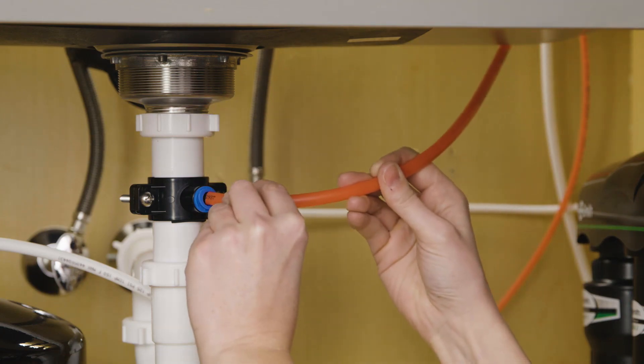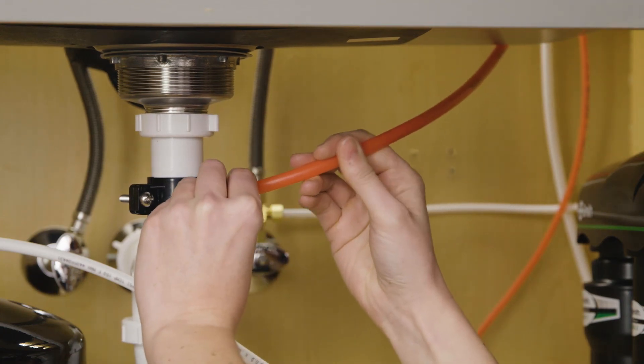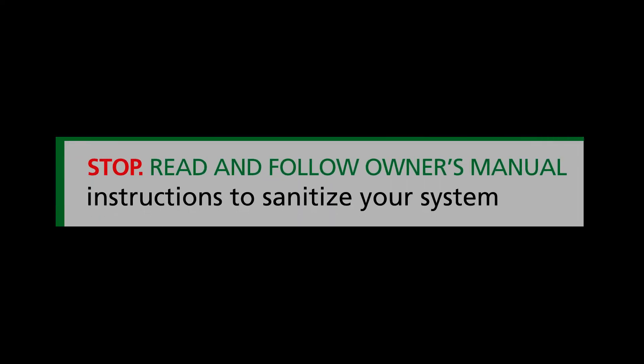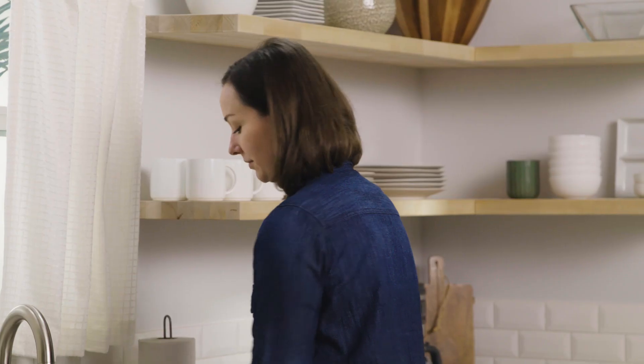Take the three-eighth inch red tubing from the faucet and insert it into the drain connector. After installation, see the manual for steps on how to sanitize your system and do a pressure test. You're done. Time to enjoy clean, filtered water.